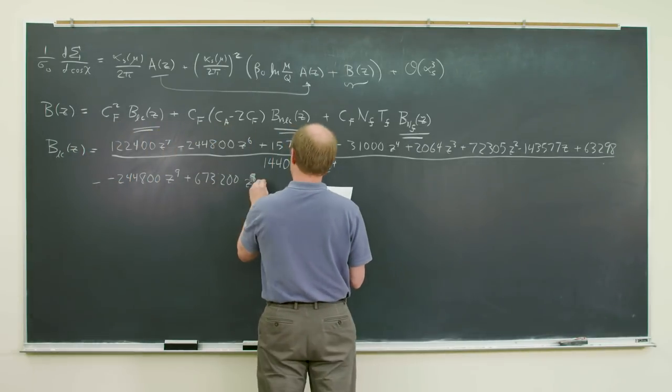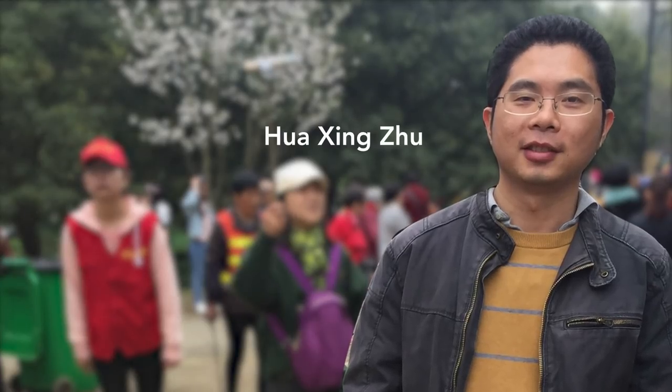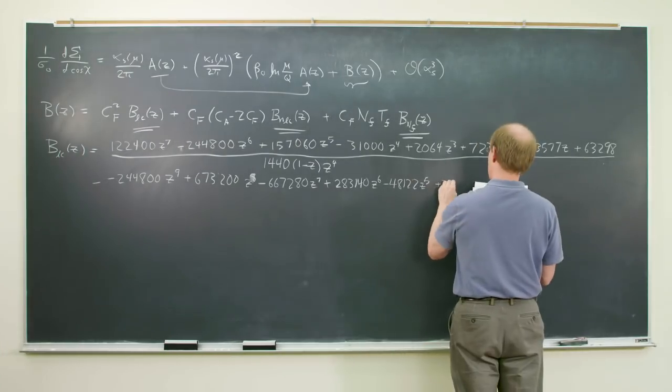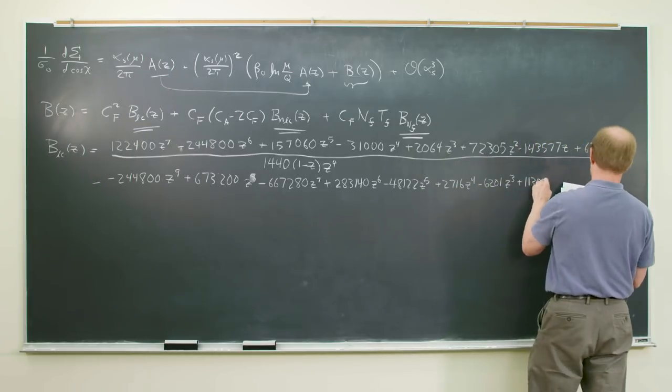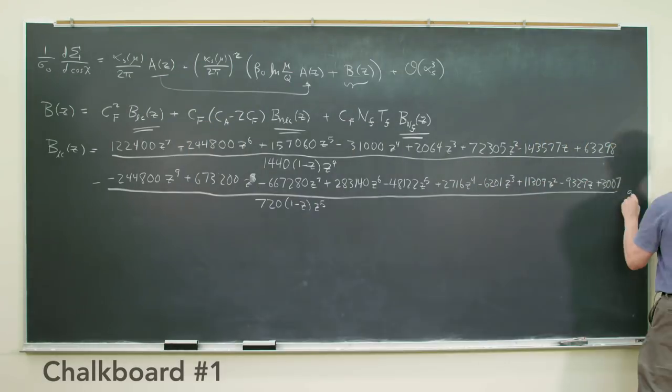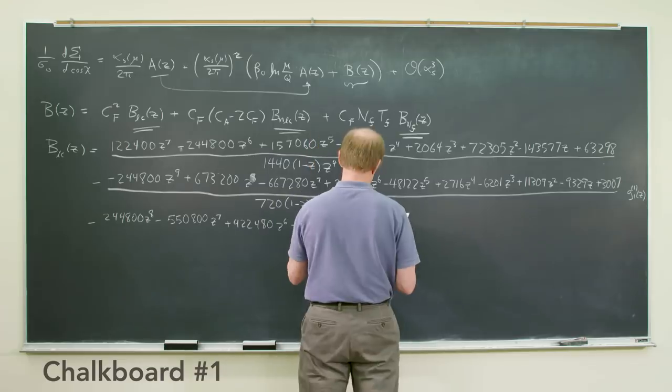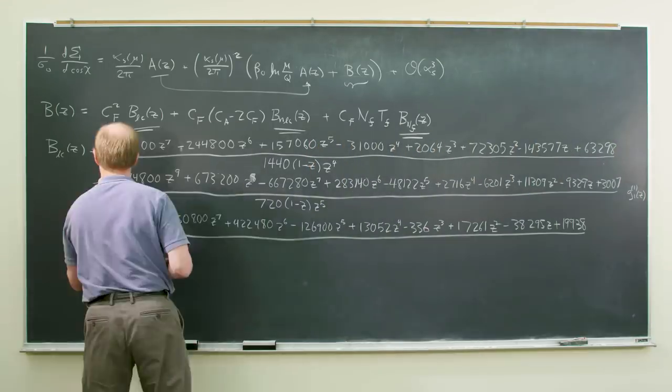Now, Lance Dixon, along with former post-doc Hua Jingju and collaborators, have figured out the formula for the biggest correction to EEC in decades. It's a formula their paper calls remarkably simple. So simple, in fact, Lance offered to write it down.